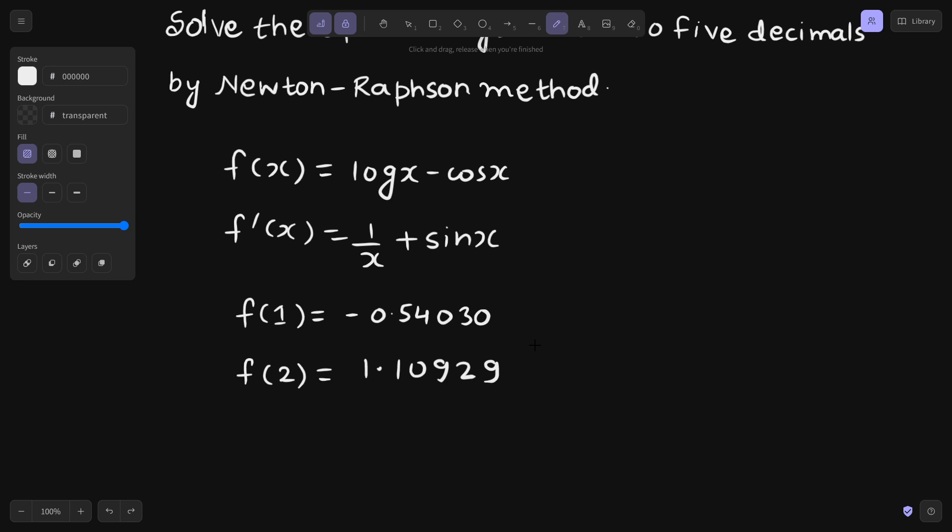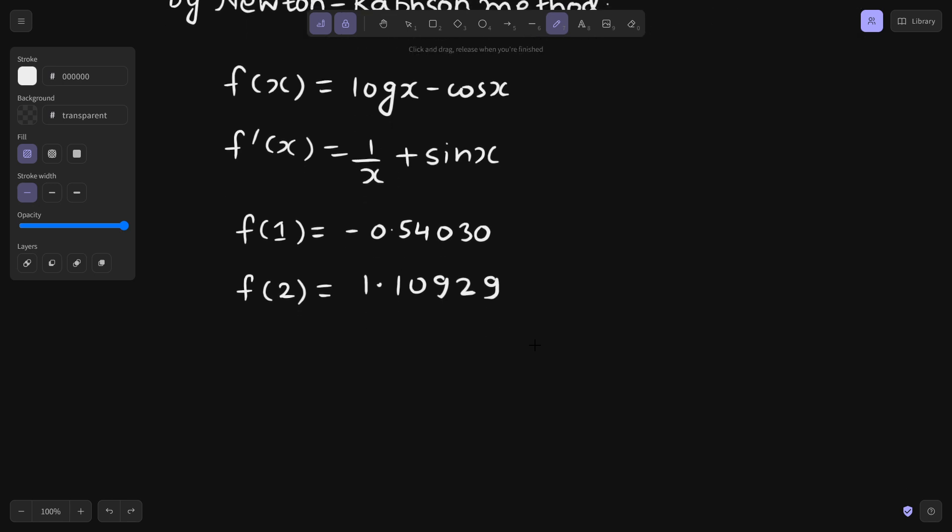So root lies between 1 and 2, but to be more precise or to reduce the number of approximations, let's check for some value between 1 and 2. If I check for f of 1.5, that will be log 1.5 minus cos 1.5, that is again positive, 0.10535. 1 is negative, 1.5 is positive.